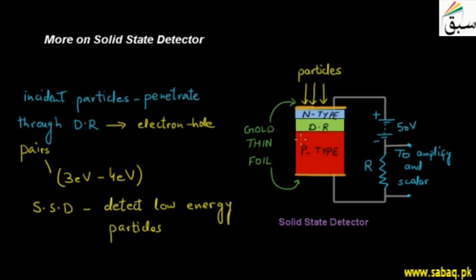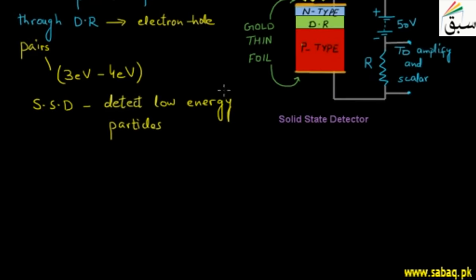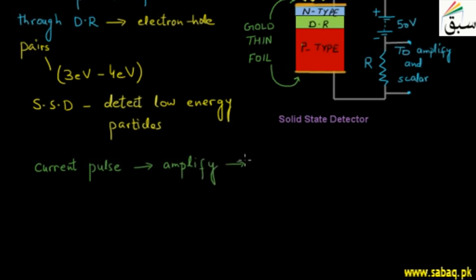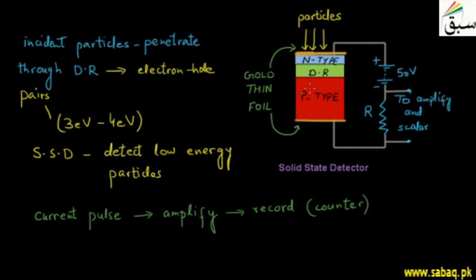Just as we discussed, inside the depletion region there is an electric field. When electron-hole pairs are created, the electric field drives them into the n-type and p-type regions, producing a current. This current pulse is then amplified and recorded in an electronic counter.